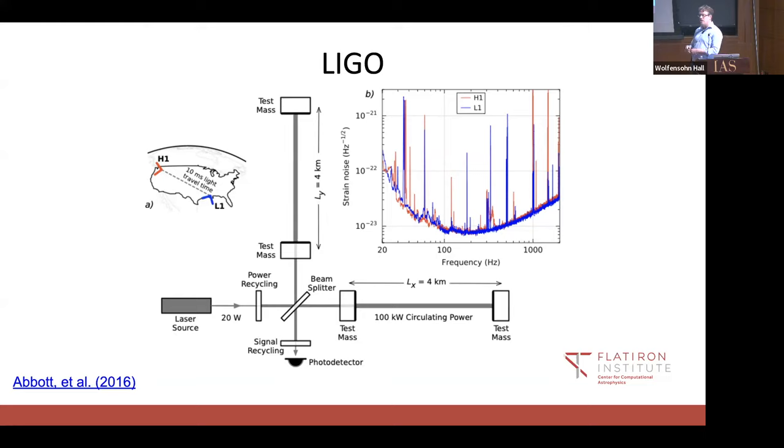The LIGO instruments at the time, here is Washington State, here is Louisiana. That's 10 light milliseconds apart. This is about the orientation of the two detectors. A schematic of how they work. Gravitational waves are disturbances in space and time. To detect them, you have to measure distances or times.